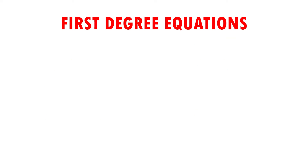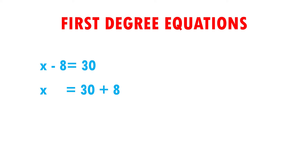Let's see another example. Here I have x minus 8 is equal to 30. Since I want to know how much x is worth, I have to clear it, so I have to leave it alone. I have that x is equal to 30. The negative 8 that is subtracting passes to the other side of the equal sign. When we pass a number to the other side, it has to pass doing the opposite — in this case it is subtracting, so it passes adding. And I have that x is equal to 30 plus 8.